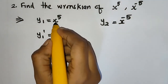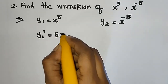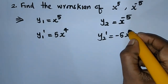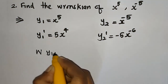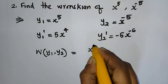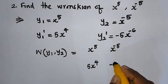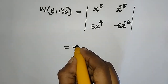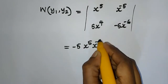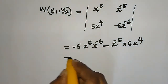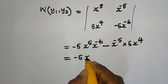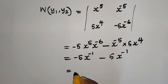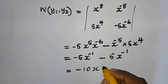Then y₁' = 5x⁴ and y₂' = -5x⁻⁶. The determinant gives: x⁵·(-5x⁻⁶) minus x⁻⁵·(5x⁴), which equals -5x⁻¹ minus 5x⁻¹ = -10x⁻¹. So the Wronskian is -10x⁻¹. That is the answer.